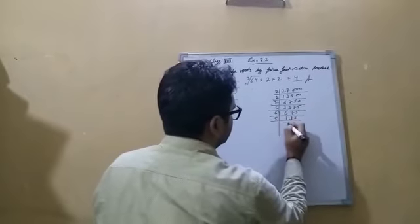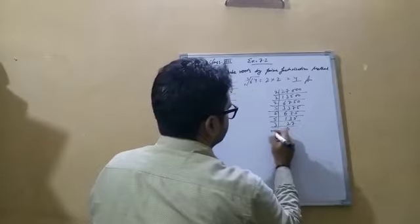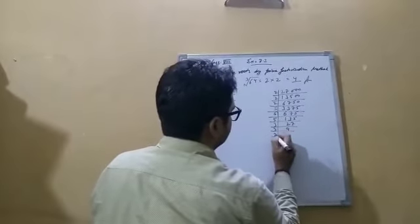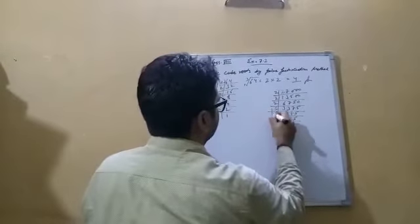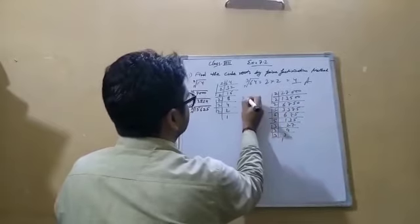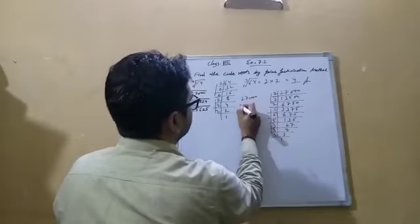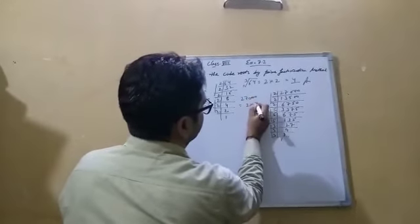Completing the factorization: 3 into 27, 3 into 9, 3 into 3. So the pairs are 3, 5, and 2. 27000 has pairs of 2 into 5 into 3.